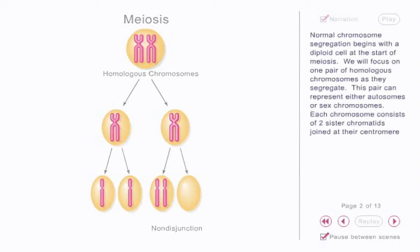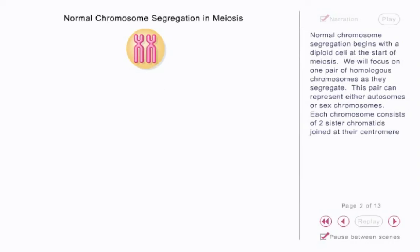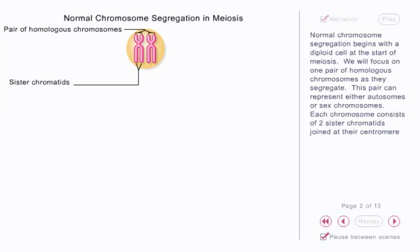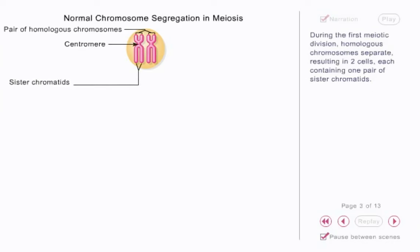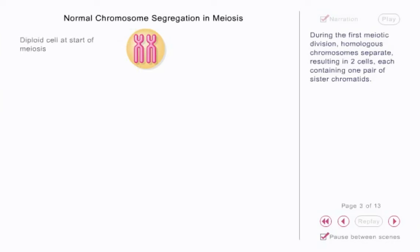Normal chromosome segregation begins with a diploid cell at the start of meiosis. We will focus on one pair of homologous chromosomes as they segregate. This pair can represent either autosomes or sex chromosomes. Each chromosome consists of two sister chromatids joined at their centromere.